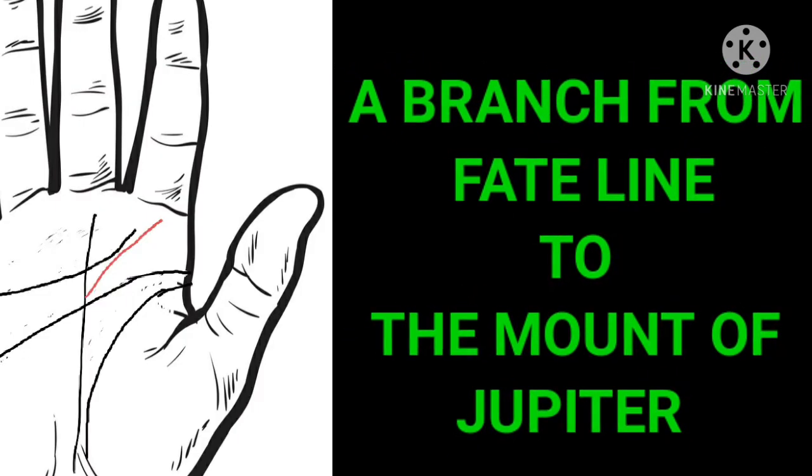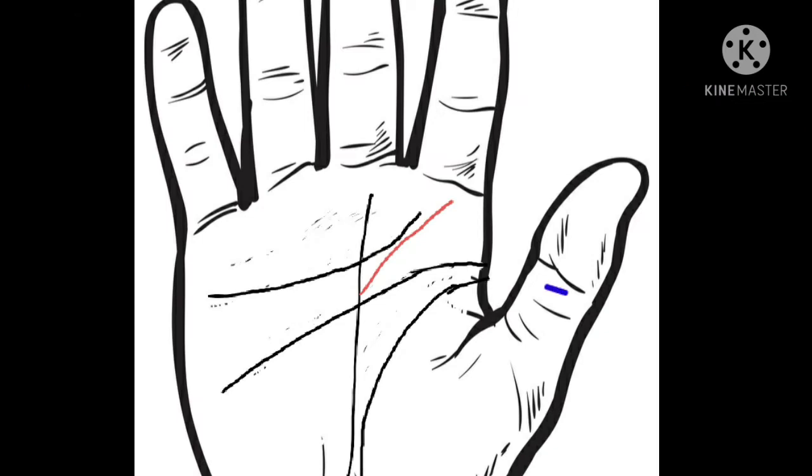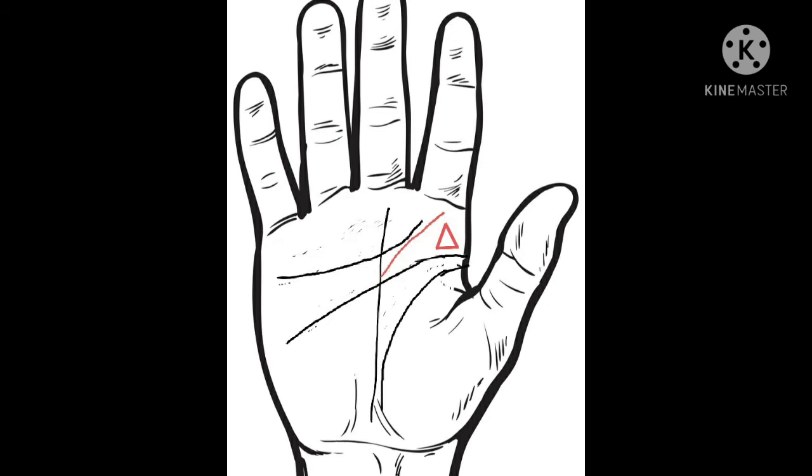A branch from fate line to the mount of Jupiter is a sign of high position in one's life. If a person is trying to crack a competitive test and has such formation on his or her hands, it represents a very strong chance of getting through. Along with this, if you have a triangle on Jupiter mount, then it is a stronger indication.